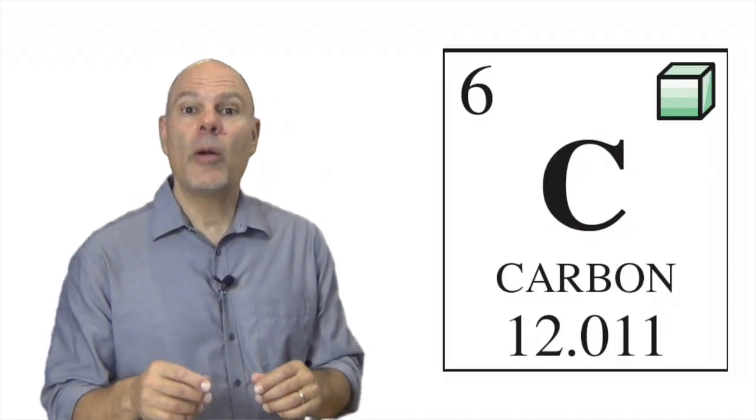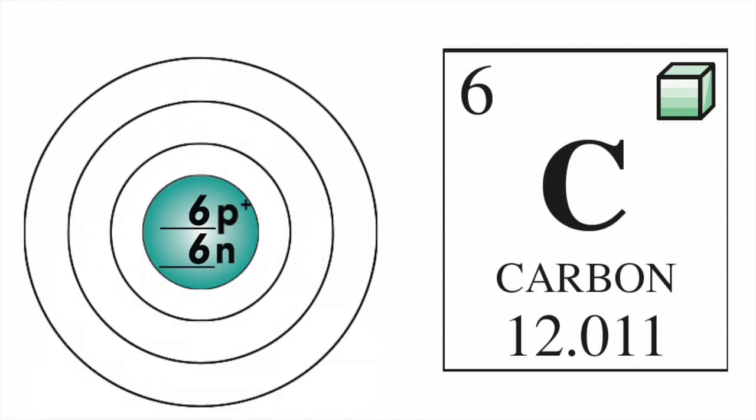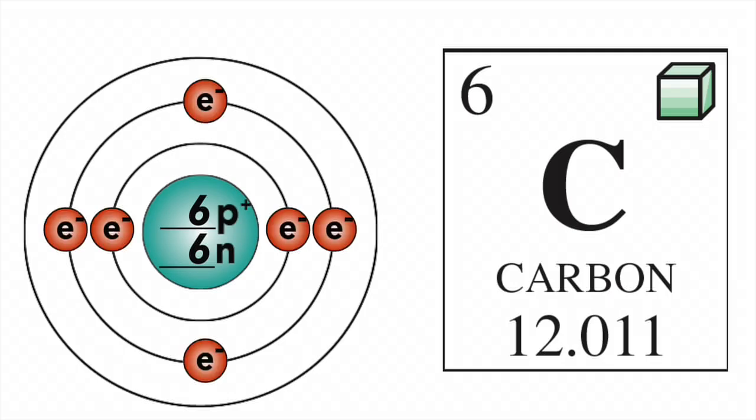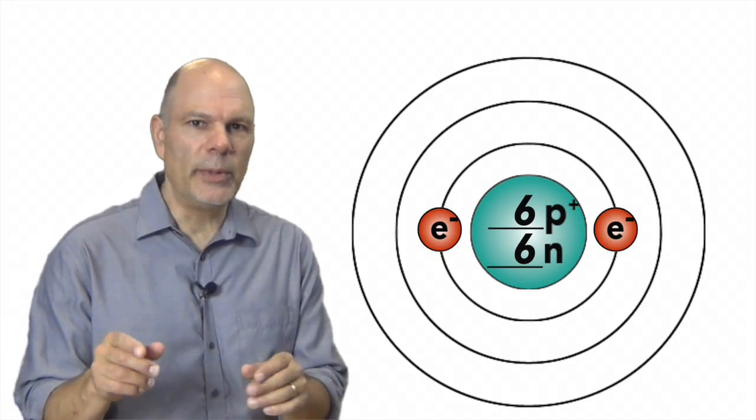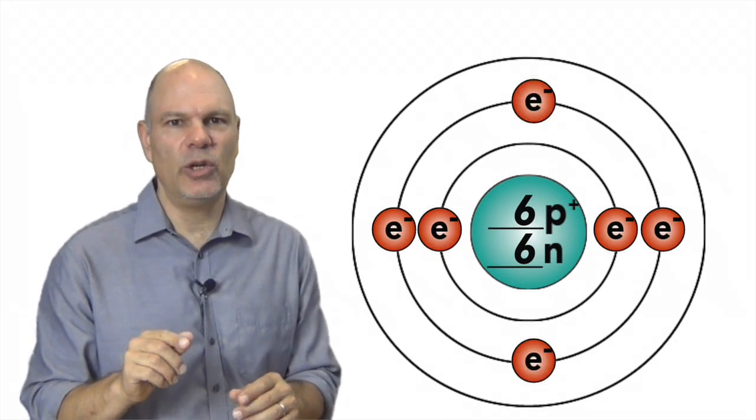Now let's look at carbon. Carbon has six protons and six neutrons. If it has six protons, that means it also has six electrons. We're going to put the first two electrons in the first orbital, and then we're going to put four in the second orbital. Note that in the second orbital, I'm placing these electrons at 0, 90, 180, and 270 degrees.